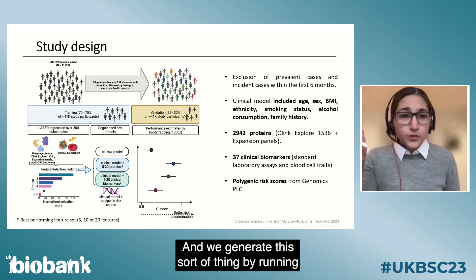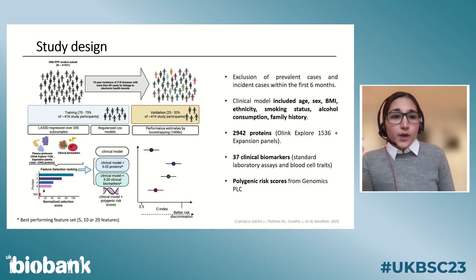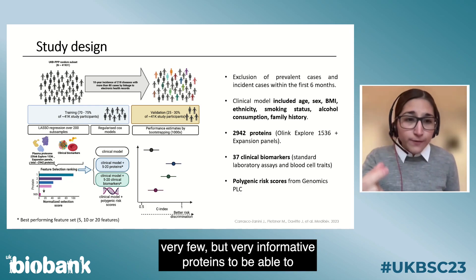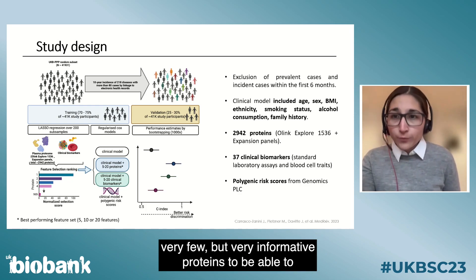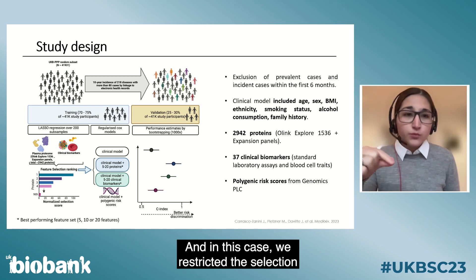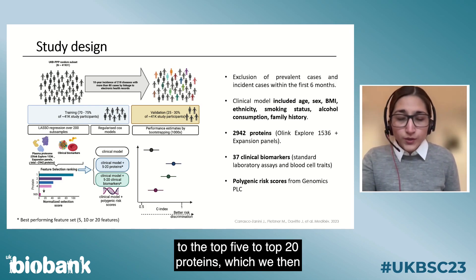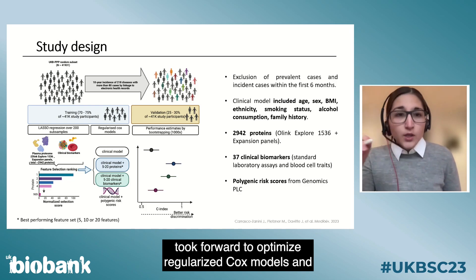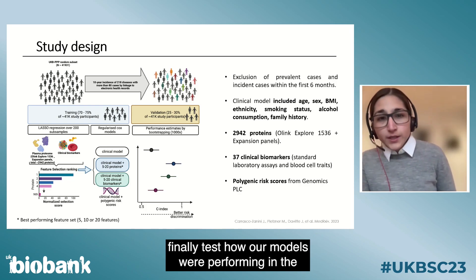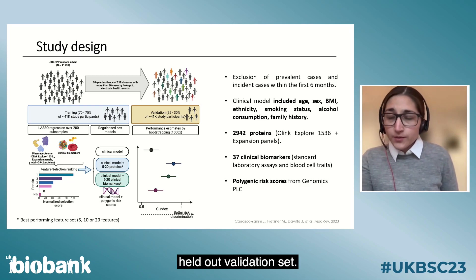We generated this ranking by running LASSO regression over multiple iterations. Once we had this ranking, we could identify very few but highly informative proteins to make these predictions. We restricted selection to the top five to top 20 proteins, which we then took forward to optimize regularized COX models, and finally tested how our models performed in the held-out validation set.